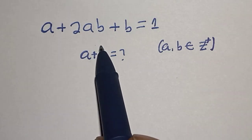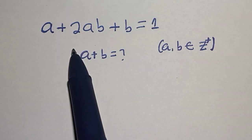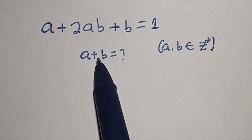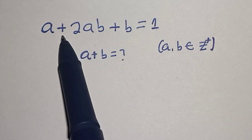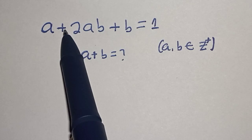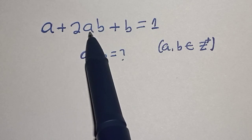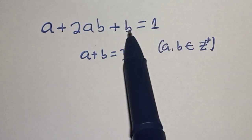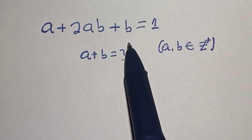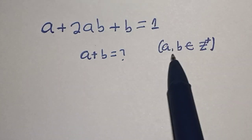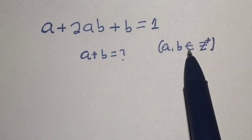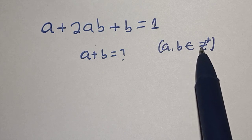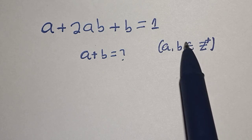Hello, welcome to Magist. In this class, we want to find the value of a plus b from this equation: a plus 2ab plus b is equal to 1, where a and b are members of the positive integers.